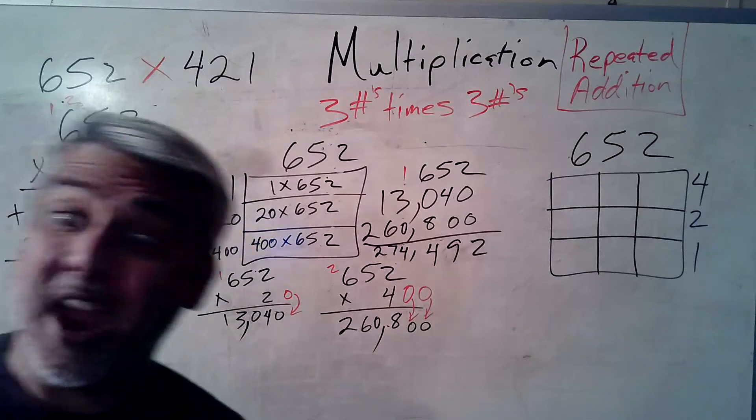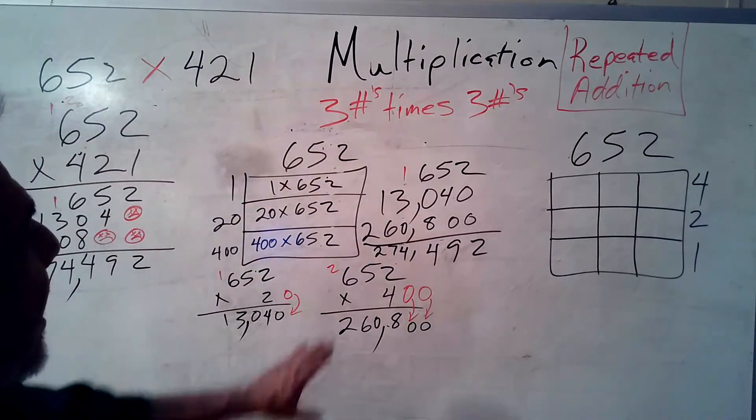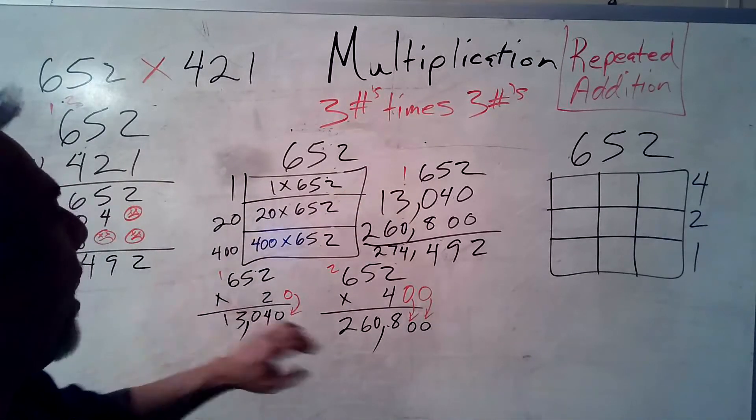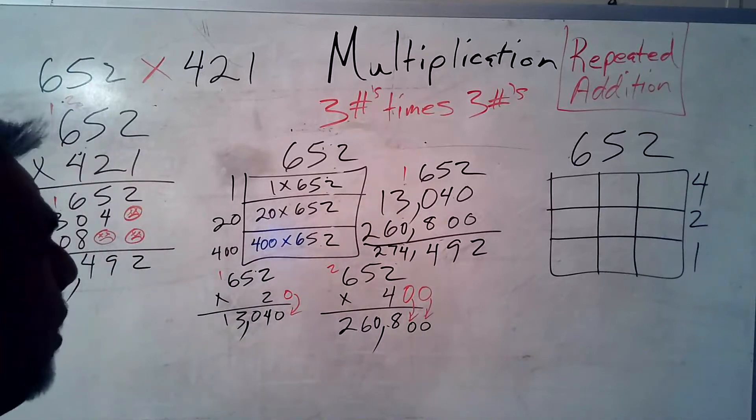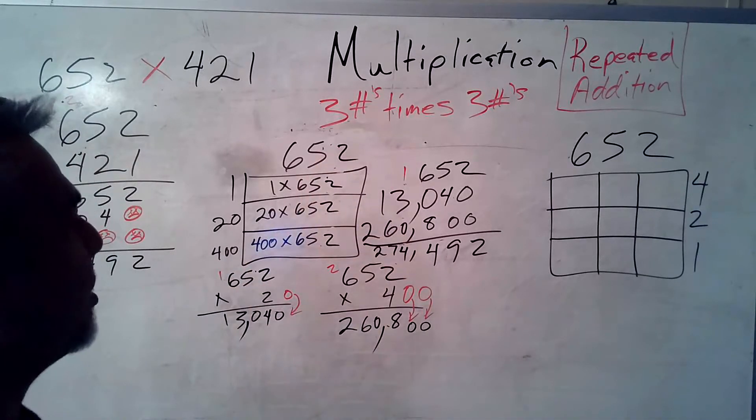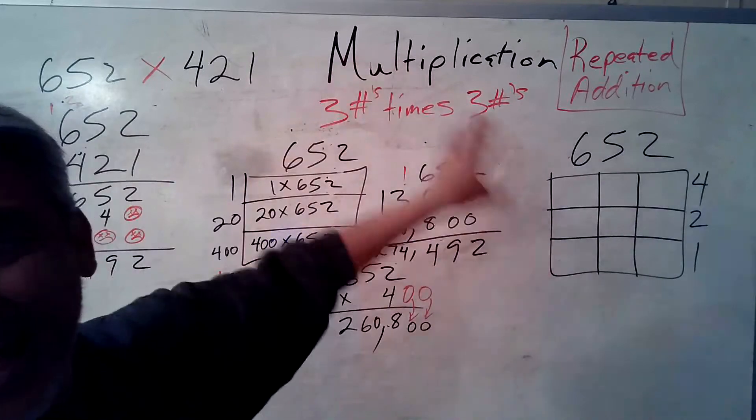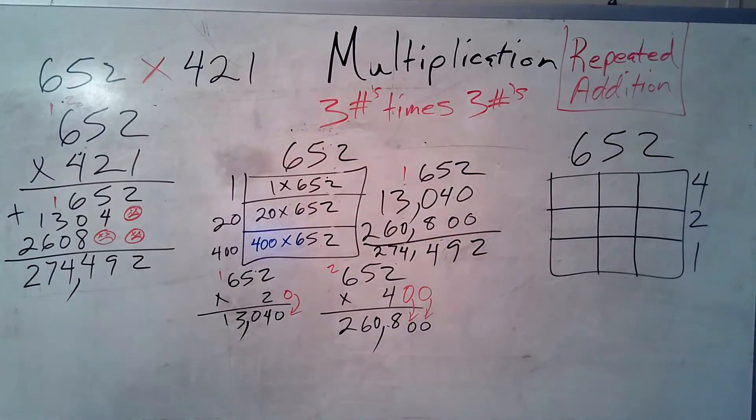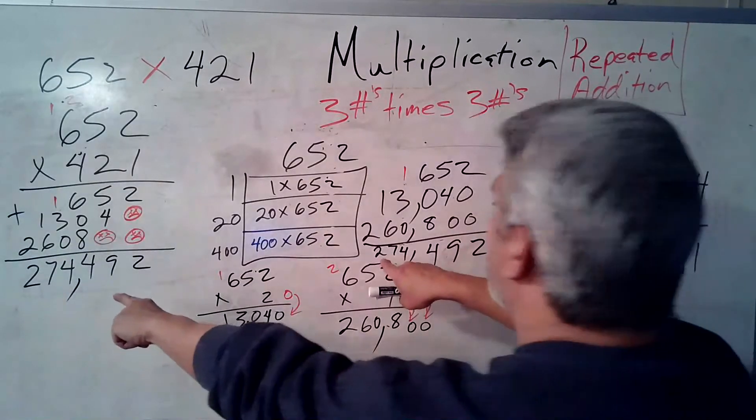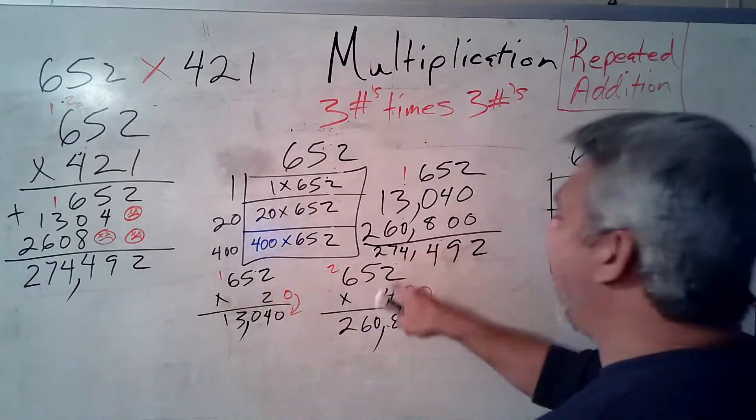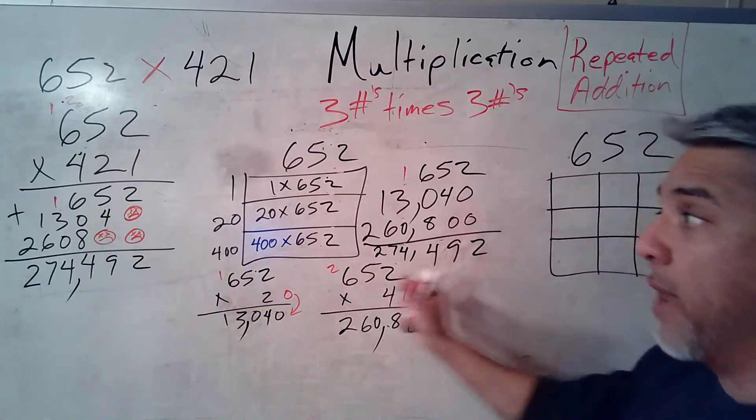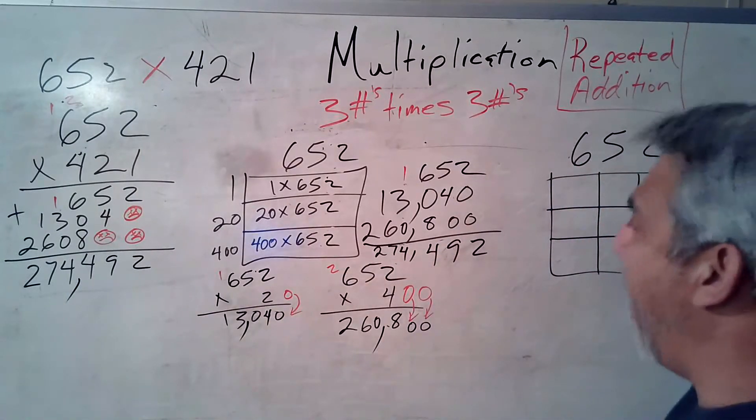But wait, there's more. I've got to take the 652 plus 13,040 plus 260,800. And I add that all up. And that gets me what? 274,492. Do they match? Yes, they match.